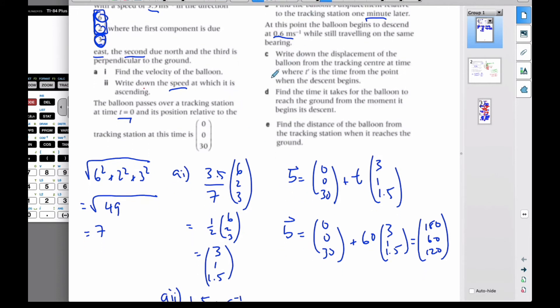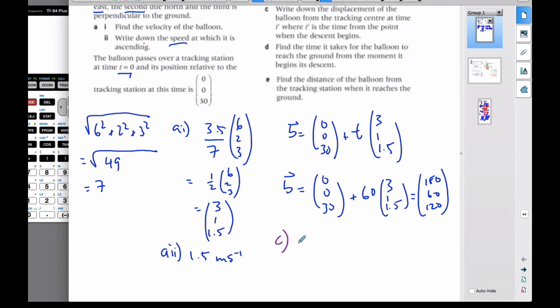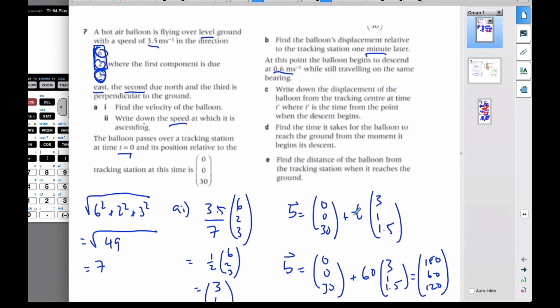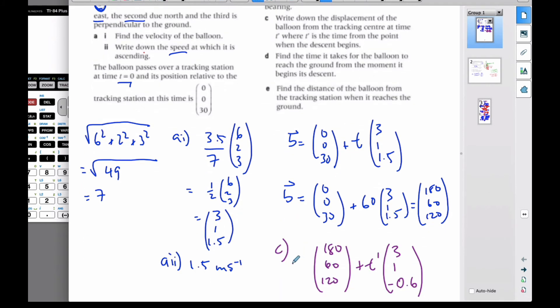For part c, it's currently at (180, 60, 120). At time t prime, it starts to go (3, 1, -0.6). The bearing's still the same, but it's going down at that speed. The balloon descends at 0.6 while traveling the same bearing. Write down the displacement of the balloon from the tracking station when it begins its descent. I'll call it b prime vector.